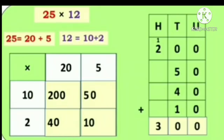Then we will add all the numbers: 200 plus 50 plus 40 plus 10. So, the answer is 300. Understood?